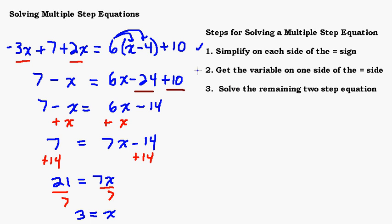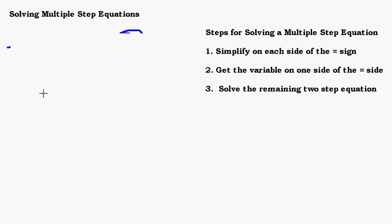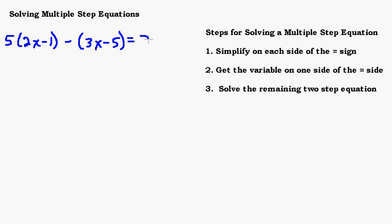How'd you do? Hopefully pretty good! Let's do one more practice problem: 5 times the quantity 2x minus 1, minus the quantity 3x minus 5, equals 7 minus 2x. If you're comfortable, pause the video, give it a try on your own, then start it back up and see how you did.